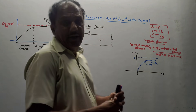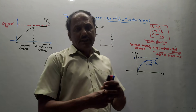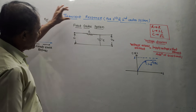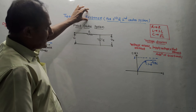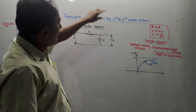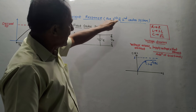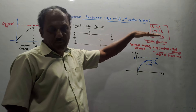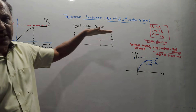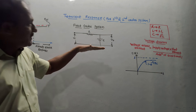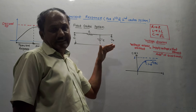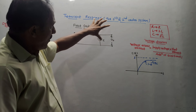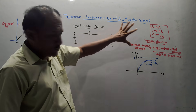Hello and welcome back to this channel. Dear students, this topic is transient response analysis for first and second order systems. It is a topic from the subject Control Systems. This is actually the second last video for unit number two.